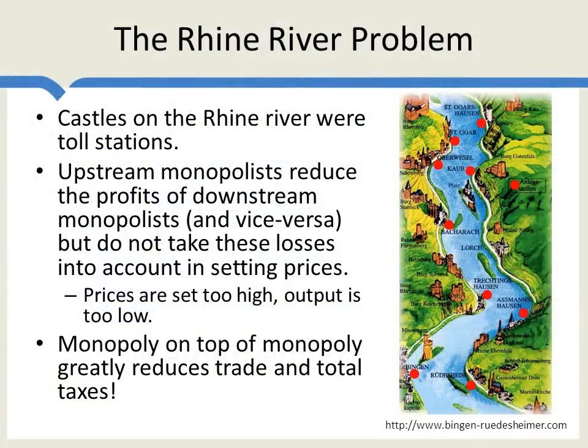We can get an intuitive understanding of the double marginalization problem by looking at the Rhine River. Tourists love to sail down the Rhine River because every few miles there are these beautiful castles. These castles, however, were not the vacation homes of the rich — they were actually toll booths, put there in order to charge people coming down the river. The problem is that the upper river monopolists, the upper river castles, the more that they charged, the less were the revenues for the downstream monopolists.